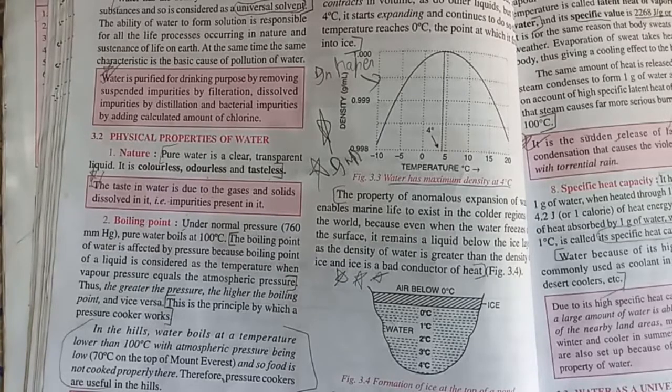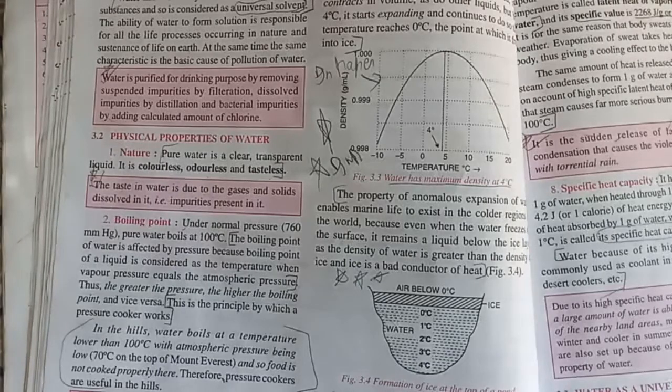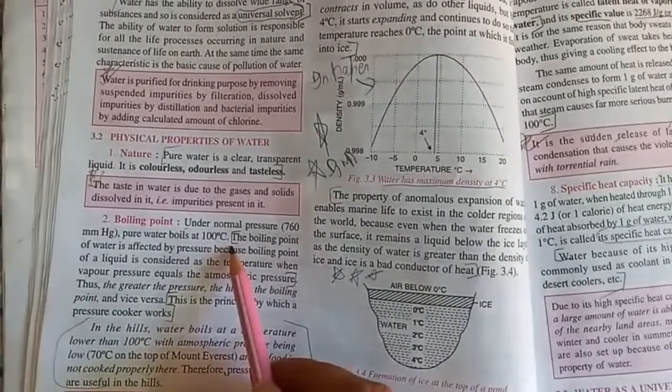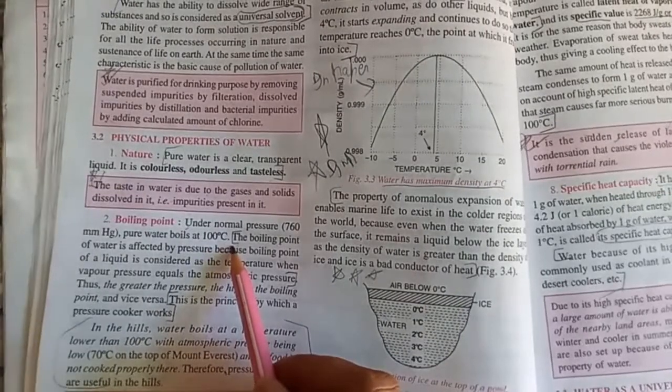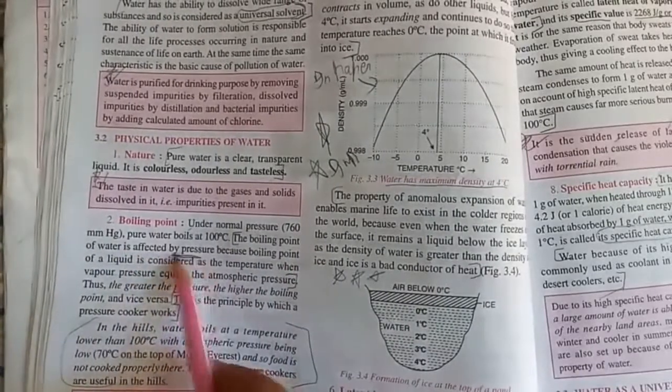All of you know the boiling point under normal pressure from the previous class. Water boils at 100 degrees Celsius. The boiling point of water is affected by pressure.